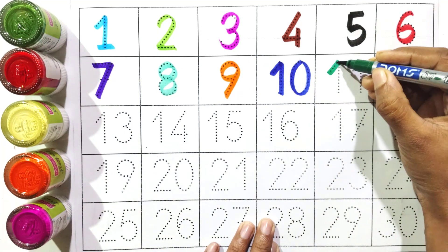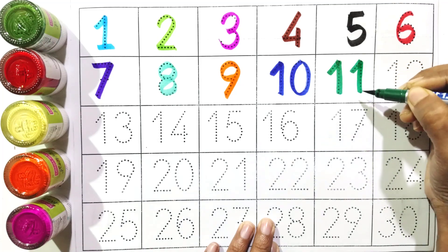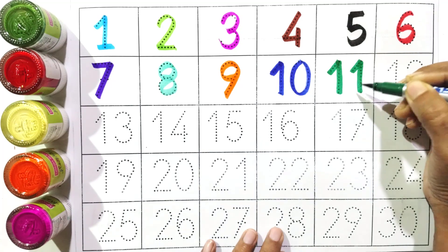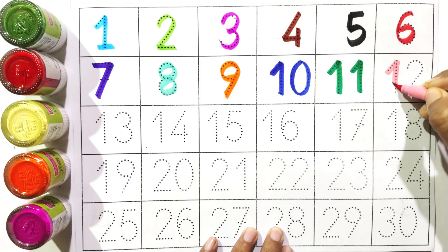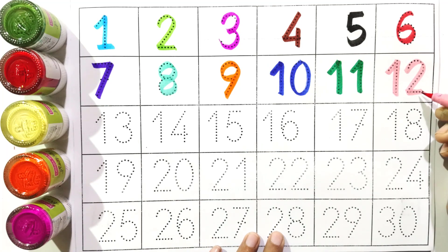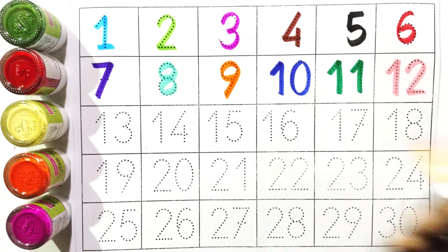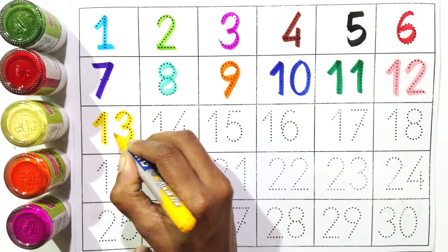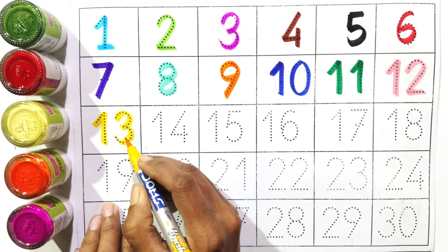One and one: eleven. Say with me: eleven. One and two: twelve, twelve. Say with me: twelve.